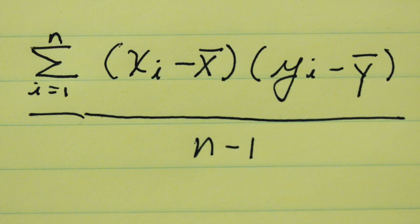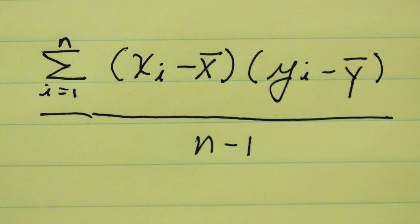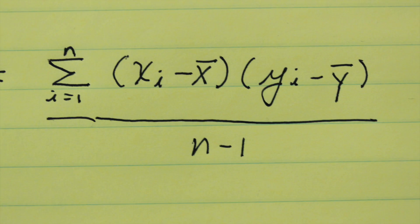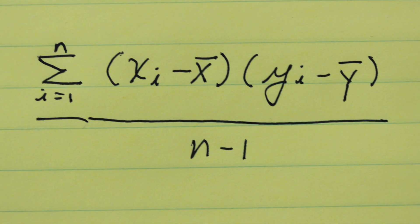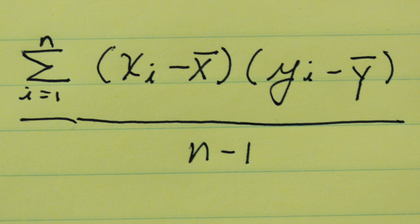So in some ways this is like variance except we have both x's and y's to consider. We're just subtracting the average x and the average y from each of those numbers.